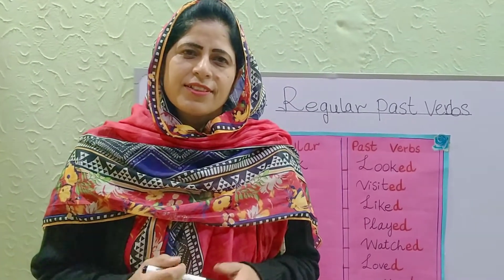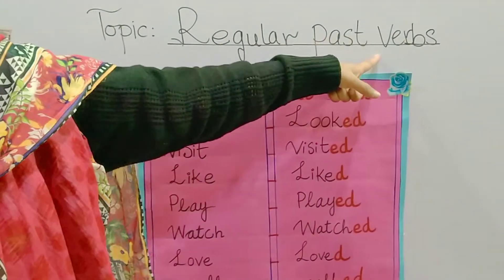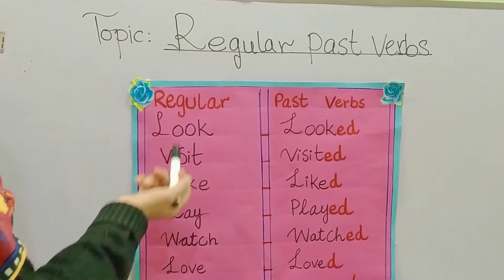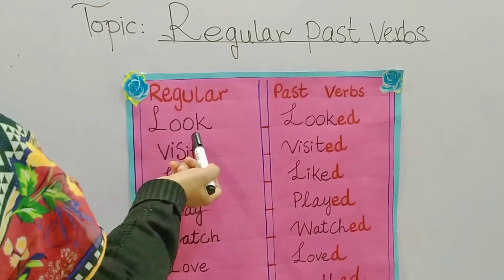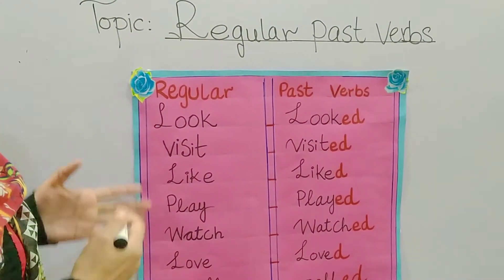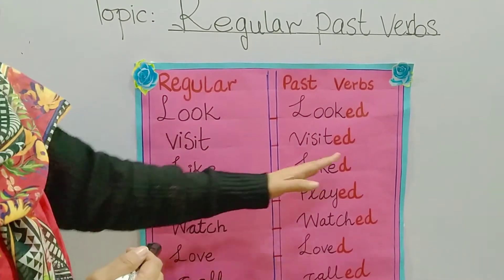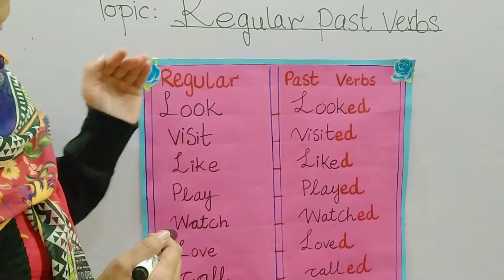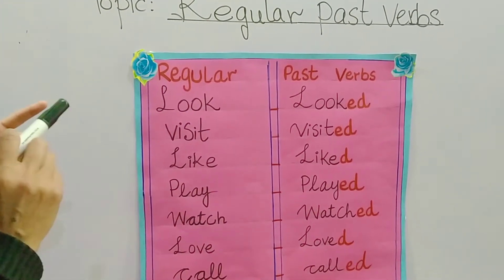Assalamu alaikum students. Today I'm here with a new topic: regular past verbs, regular past tense. This line I have written in present tense, so I'm going to convert 'look' into past tense by adding 'ed' at the end. When we change present tense into past tense by adding 'ed' at the end of every word, this is called regular past verbs or regular past tense.